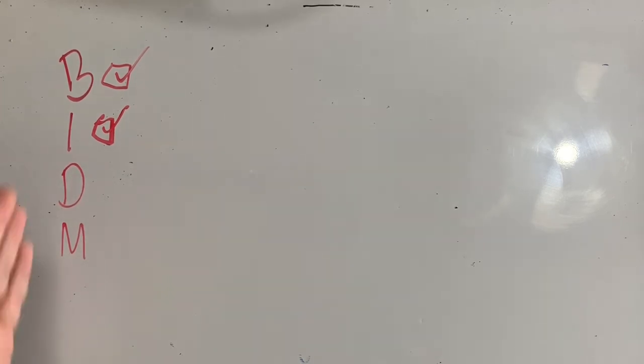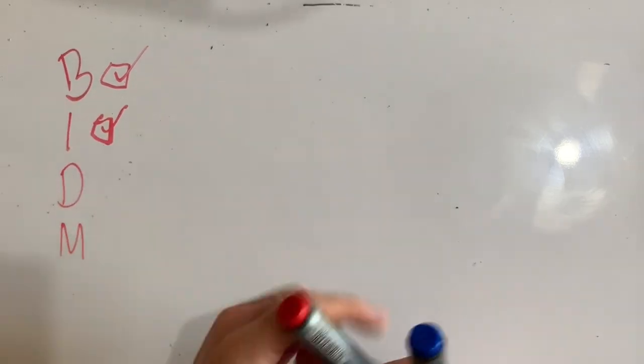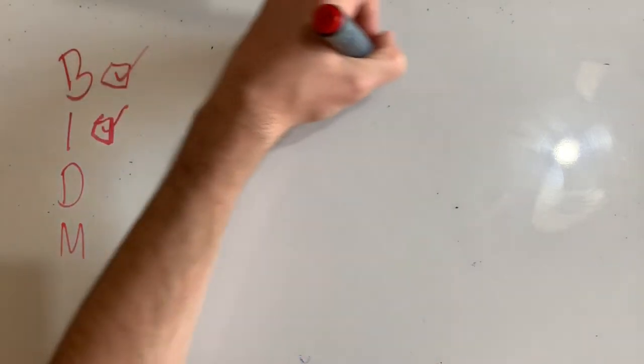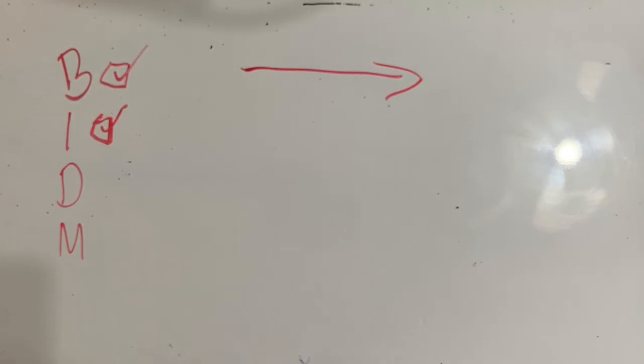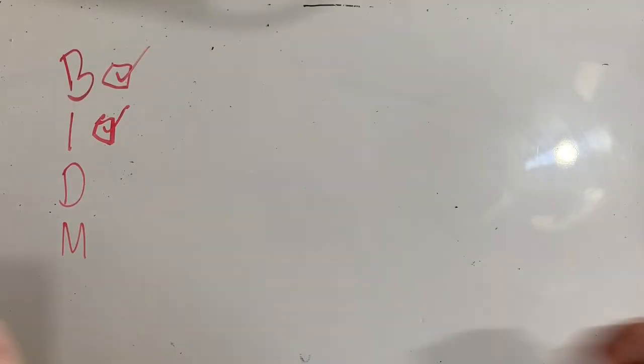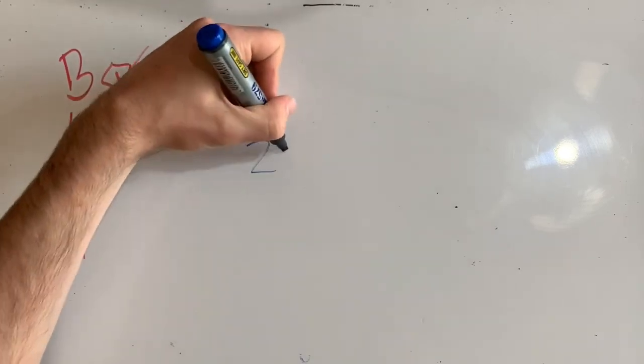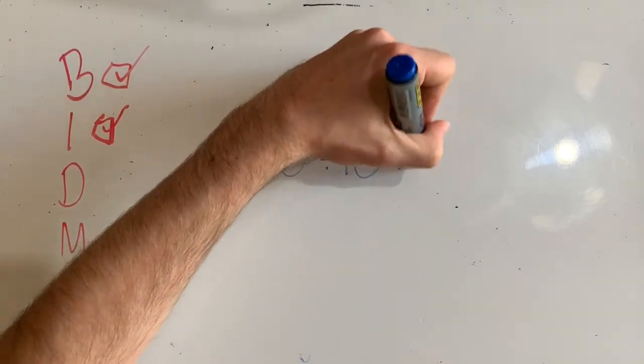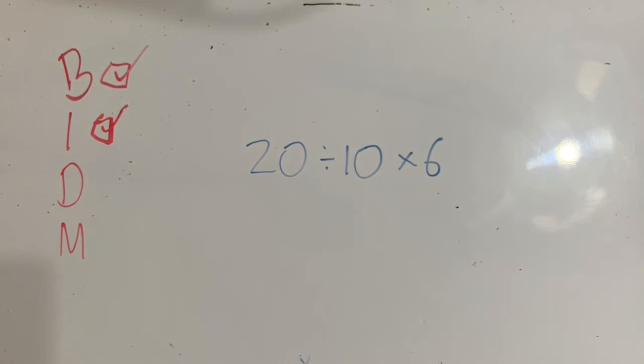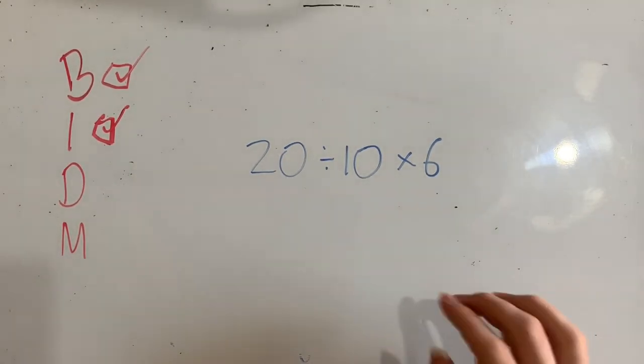Our next step is to do division and multiplication. And these are as important as each other. So if we have division and multiplication on the same one, we then work from left to right, just like you're reading a book in English. So for example, that looks like this. If I have 20 divided by 10 times 6, I might be tempted to go, oh, well, I want to do the multiplication first. That's easier. No.